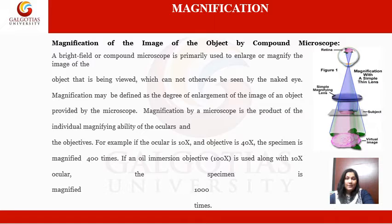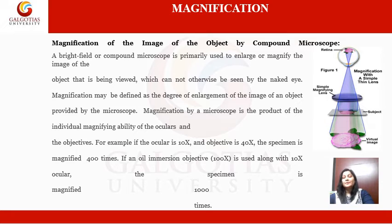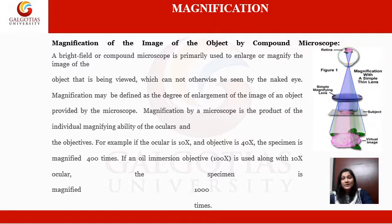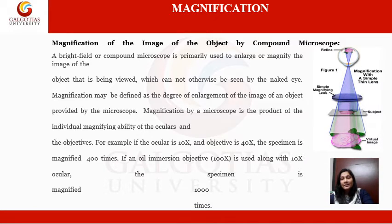Now we will learn about a new term: magnification. Magnification can be defined as the degree of enlargement of any image. We have used the compound microscope as our example because even a single hand lens can be considered a microscope, but a compound microscope is a basic type in which two or more lenses are used to magnify the image of the object.